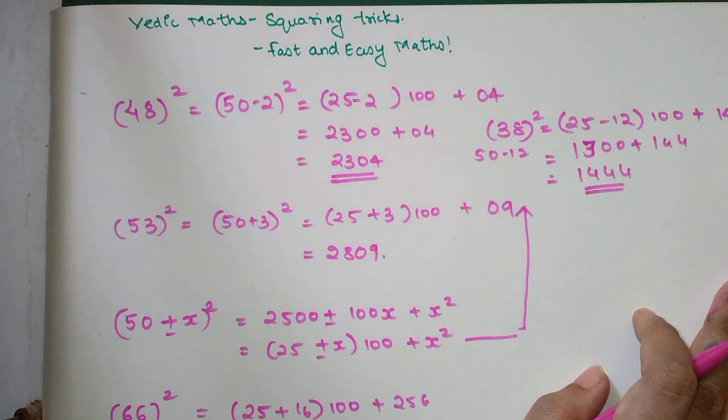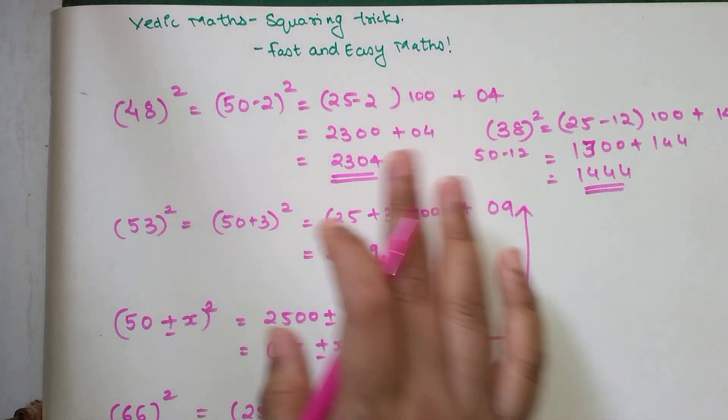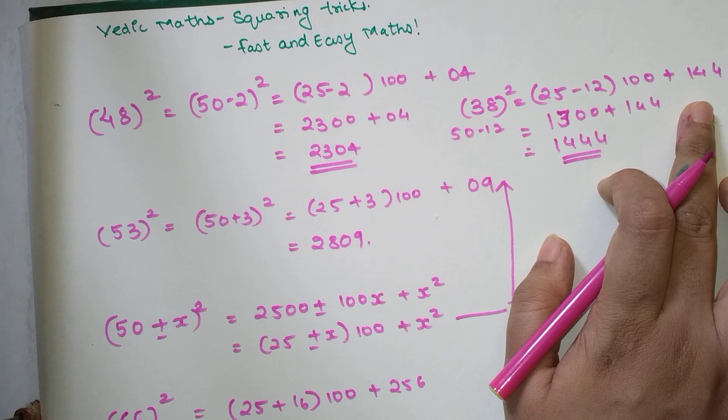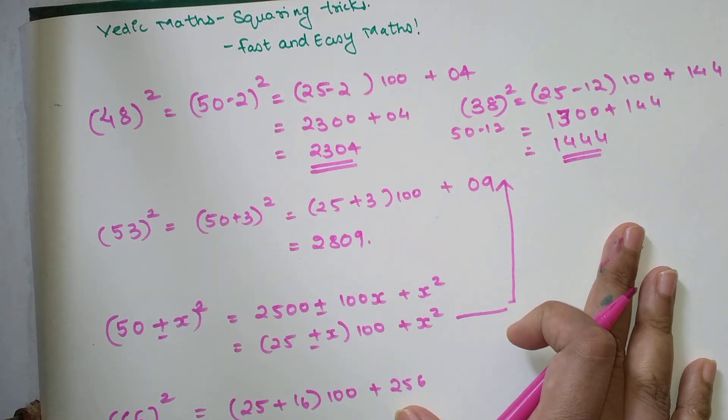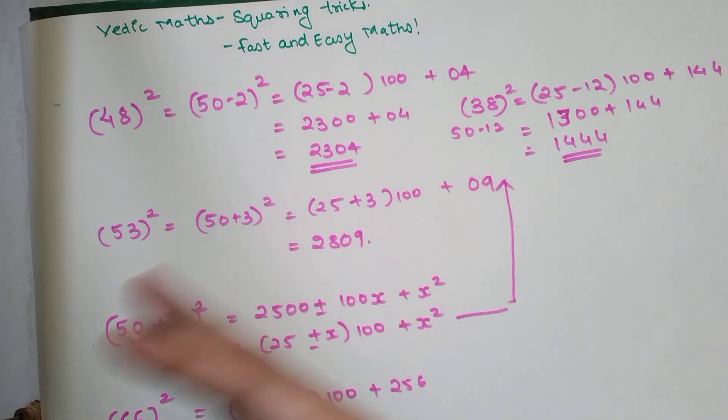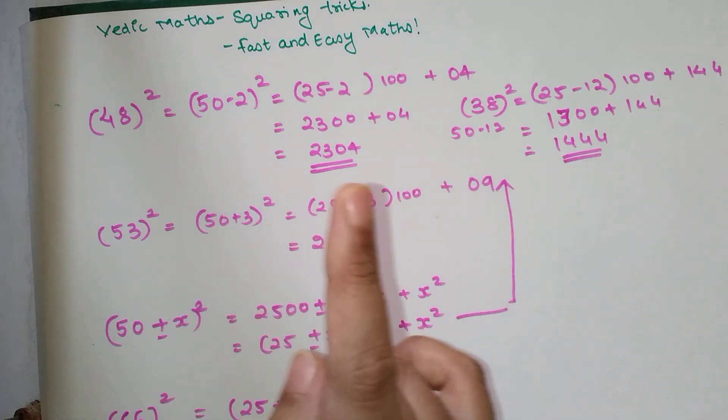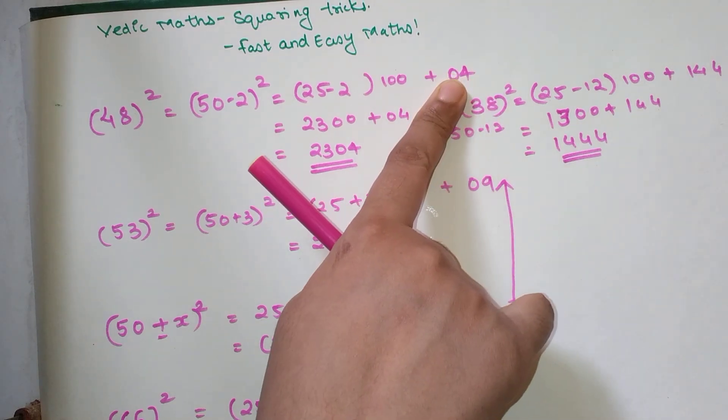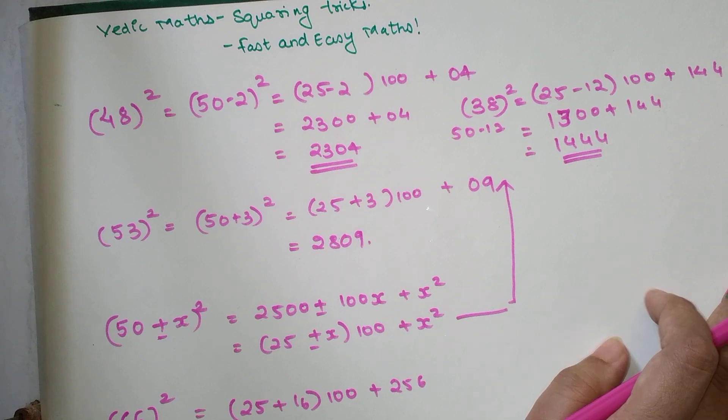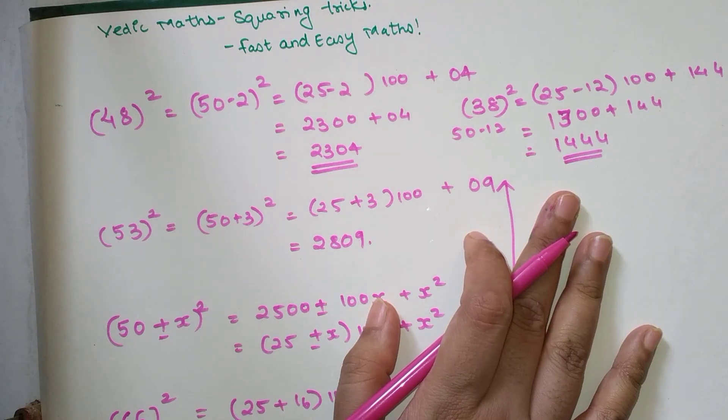Pretty cool, right? Students might be wondering why I took 04 over here and why am I taking these as just 144 and just 256 over here. So the answer to this is in this trick, whenever the last digit square is just a single number at that time, you are going to take it as 04. But if it is more than that, we are just going to keep it as it is. So I hope this is making sense to everyone.